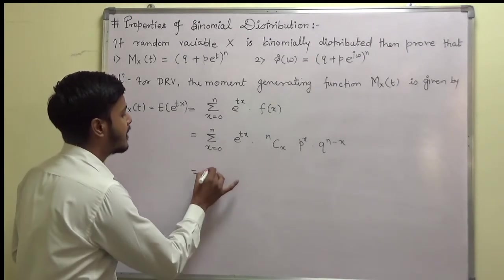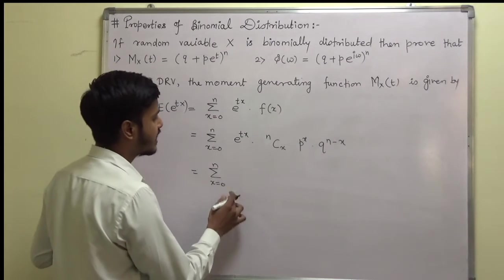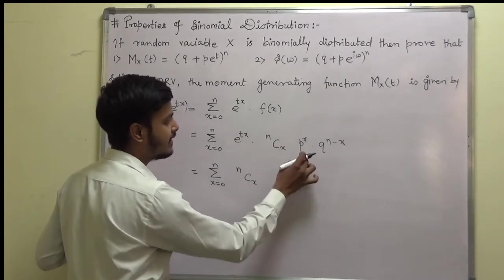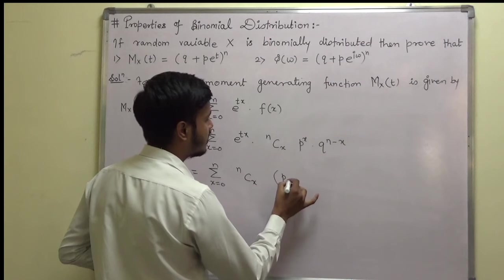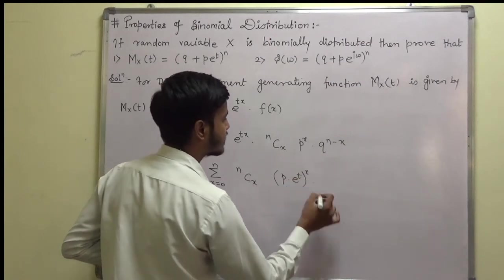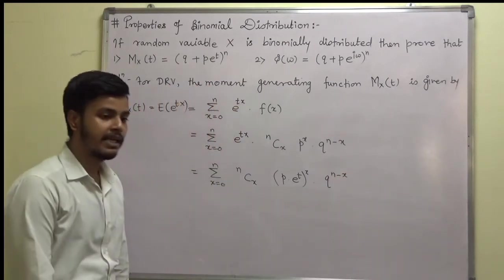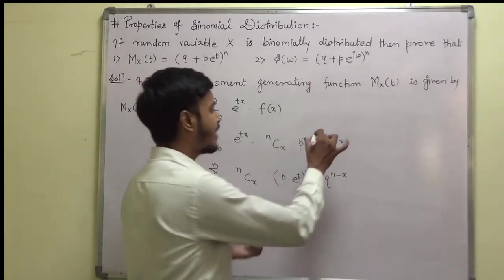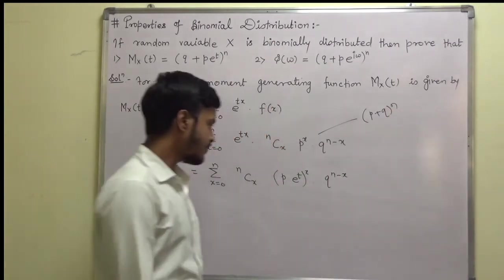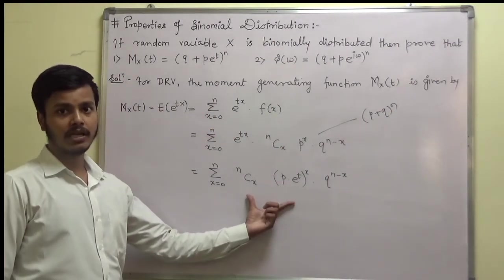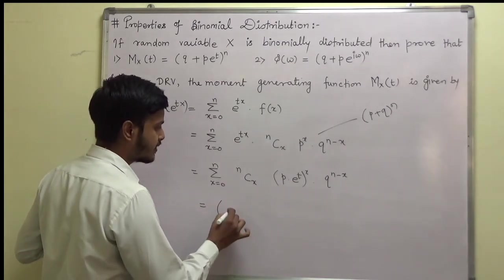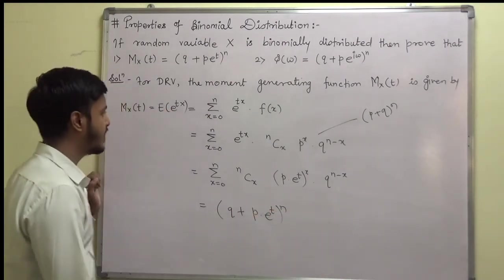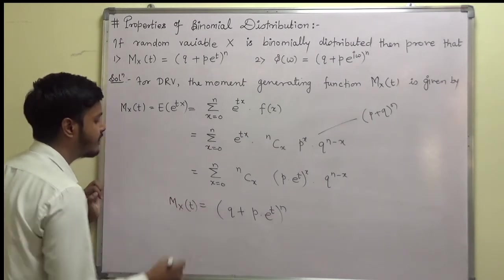Now combining the like terms, we get summation x = 0 to n of nCx · (p·e^t)^x · q^(n−x). As we know, this corresponds to the binomial expansion of (q + p·e^t)^n. So that is what we wanted to prove — this is the moment generating function, simple.